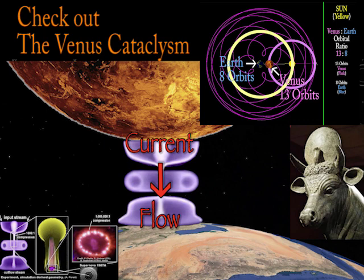There was a discharge which ionized Venus and left the two planets electromagnetically linked as evident in their 13 to 8 orbital symmetry.